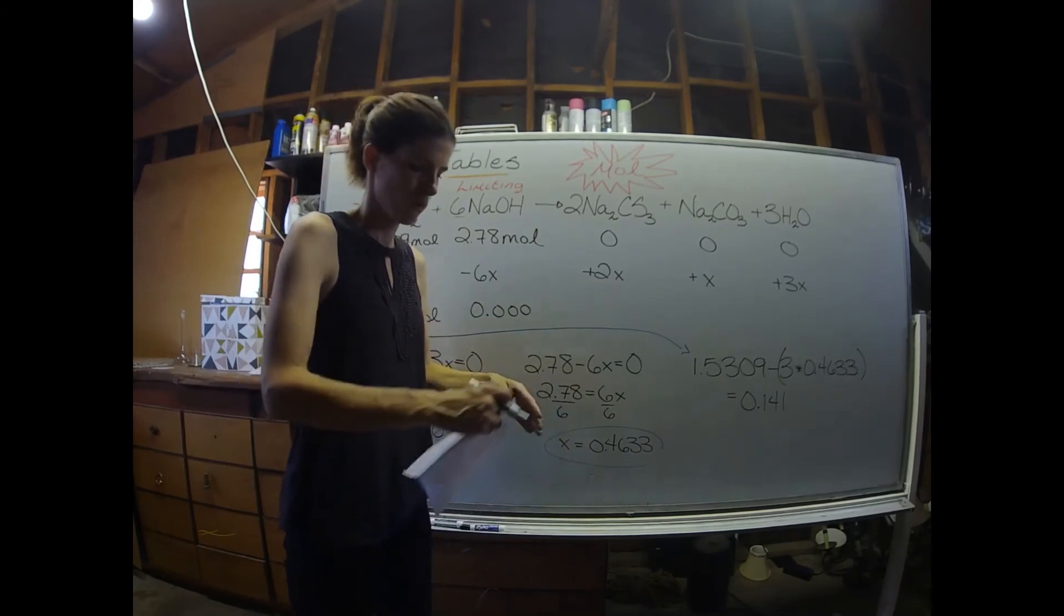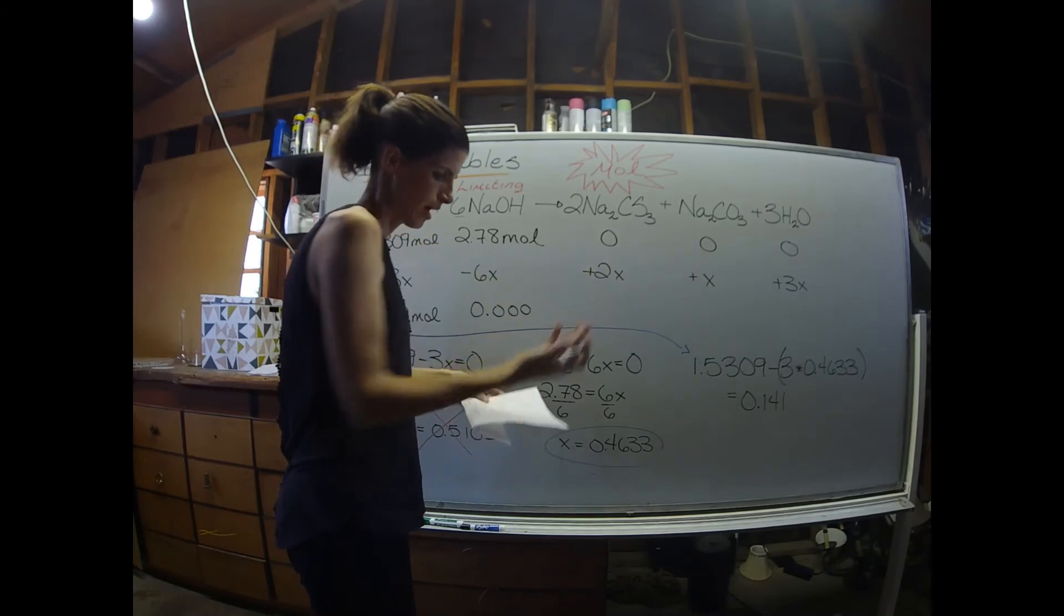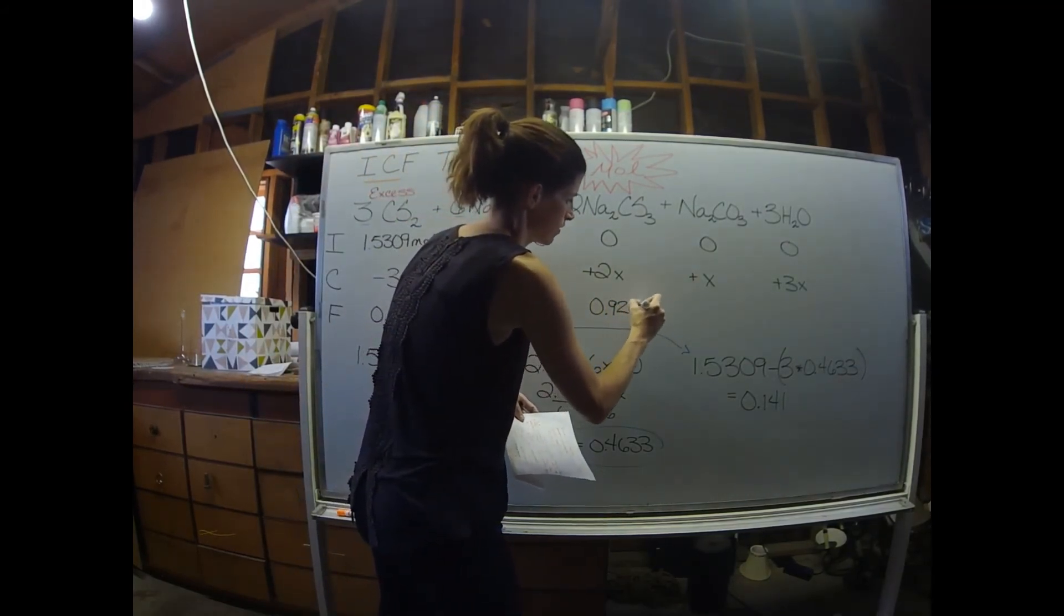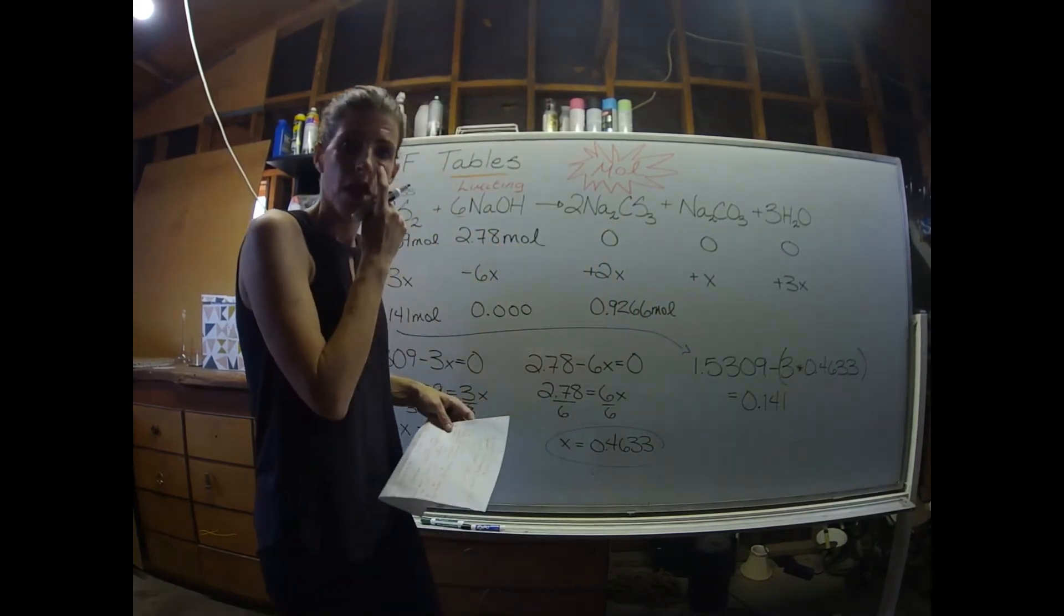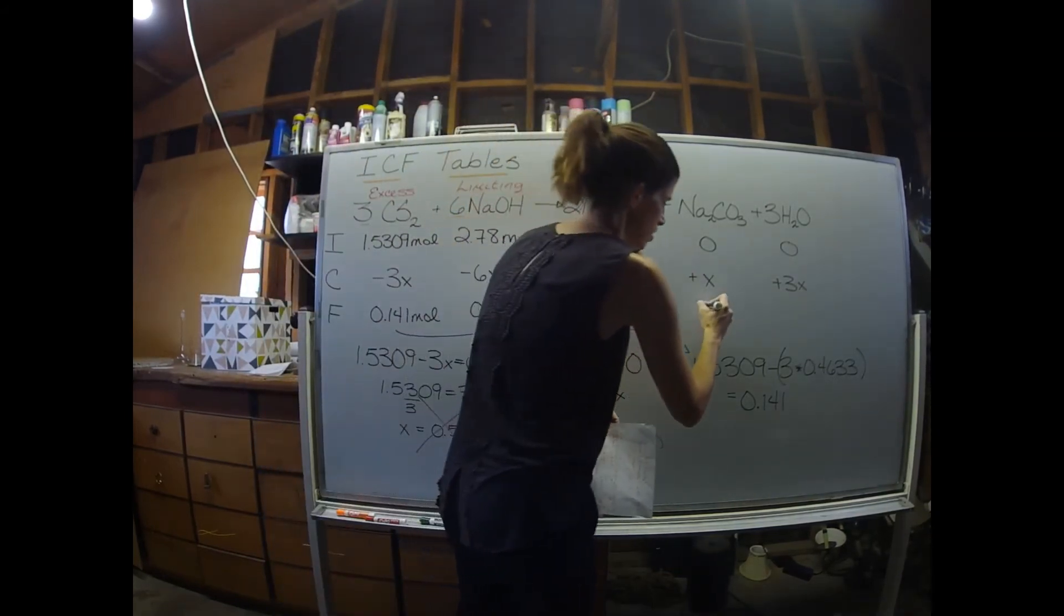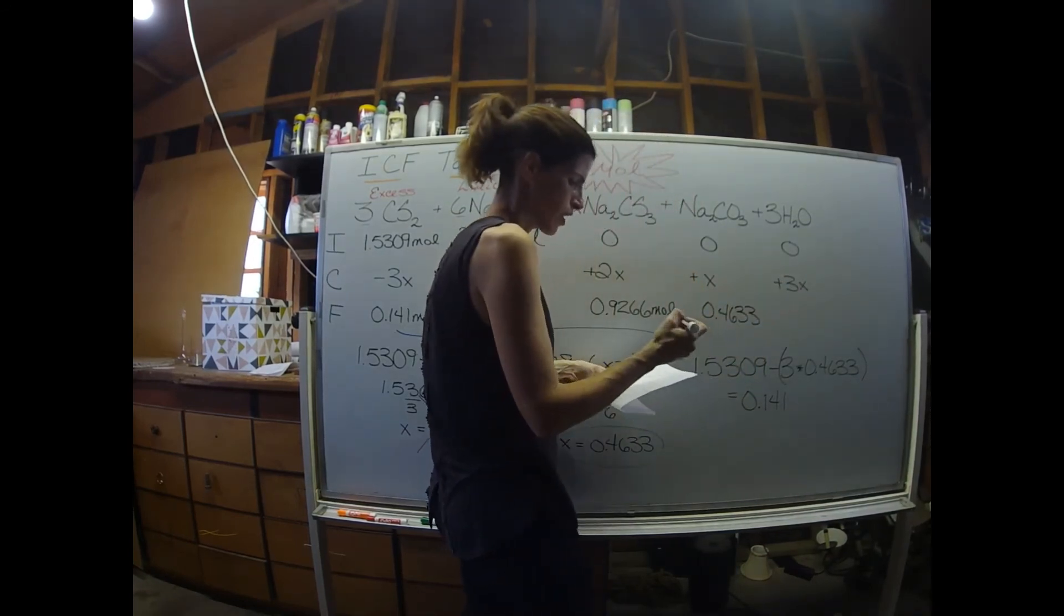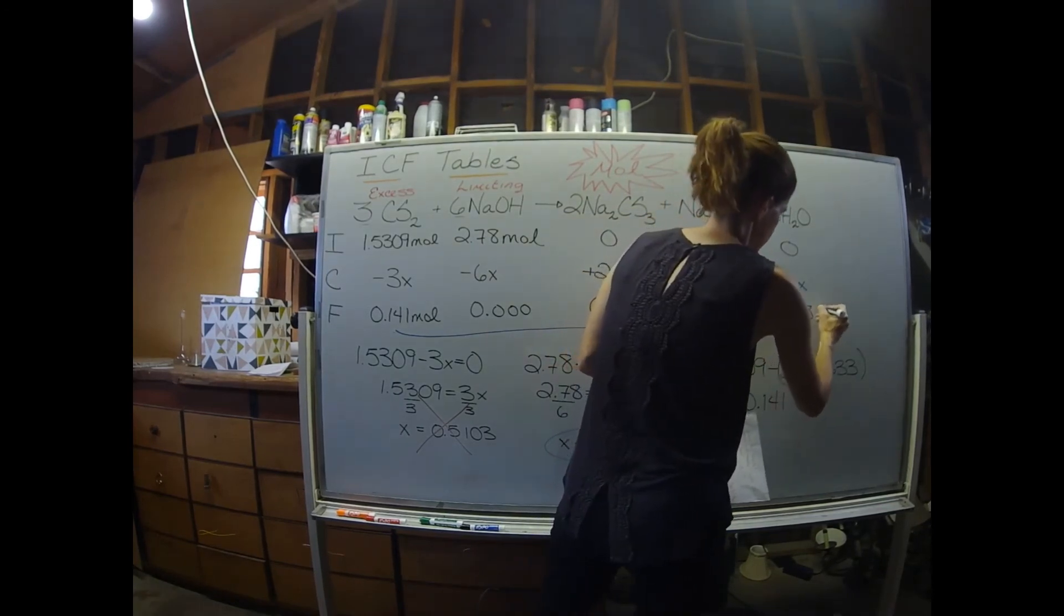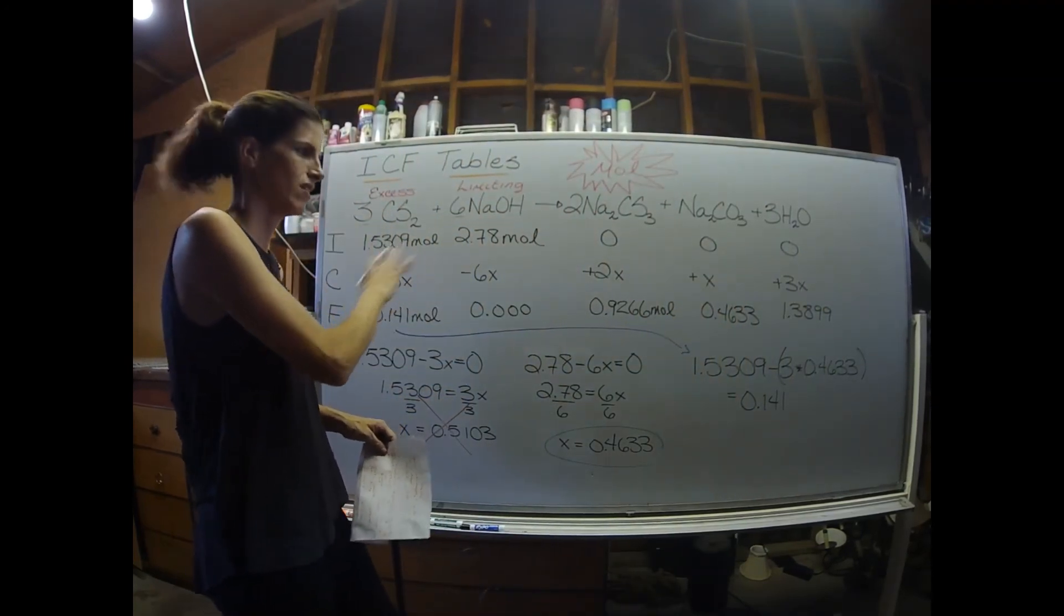Now, if I do 2 times 0.4633, and there's nothing up here, so it's just 2 times x, I get 0.9266 moles, and that's going to be the moles of the product here. Same thing, just x, so 0.4633. And then we have 3x for the water, which gives us 1.3899 moles of water. Every value in this table is moles, even if I didn't write it in.